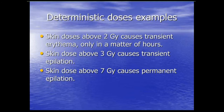Some dose examples. Skin doses above 2 gray cause transient erythema within hours. Skin dose above 3 gray causes transient epilation or hair loss. Skin dose over 7 gray causes permanent epilation. There was a notable case at Cedars-Sinai where CT heads with perfusion protocols were being run with excessively high doses — patients developed radiation burns and hair loss, and the machines had to be investigated.